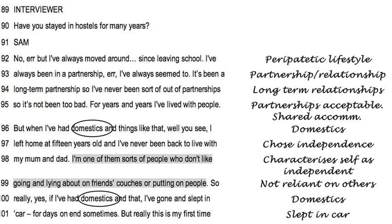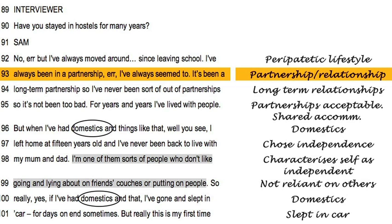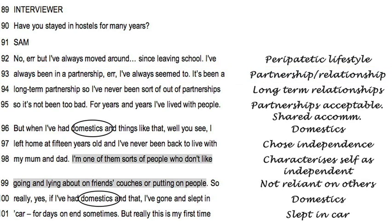For example, the first line where Sam says 'no, but I've always moved around since leaving school' — I've called that a 'peripatetic lifestyle.' Then the next line he says 'I've always been in a partnership' — I've just said 'partnership relationship.' There's nothing deep here. What I think is most useful is the headings — the codes you come up with at the end — which you might want to reuse. I don't think anybody actually saves their line-by-line coding, but it's not a bad way of breaking things down.